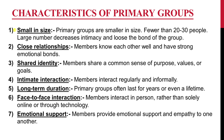Characteristics of primary groups are as follows. First is small in size — primary groups are smaller in size, fewer than 20 to 30 people. A large number decreases intimacy and weakens the bond of the group.